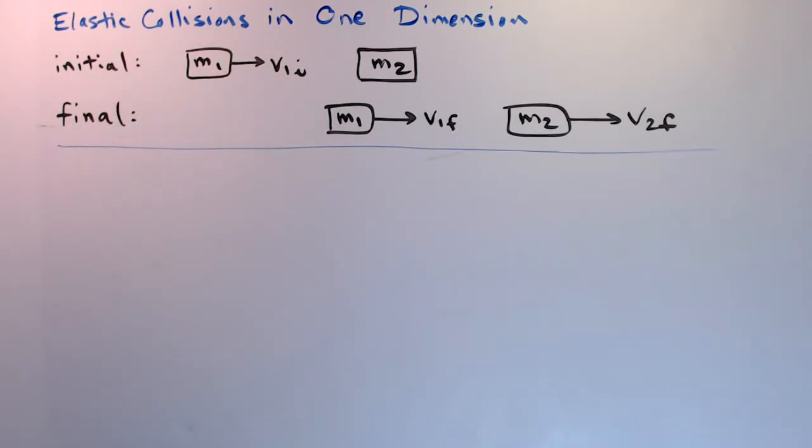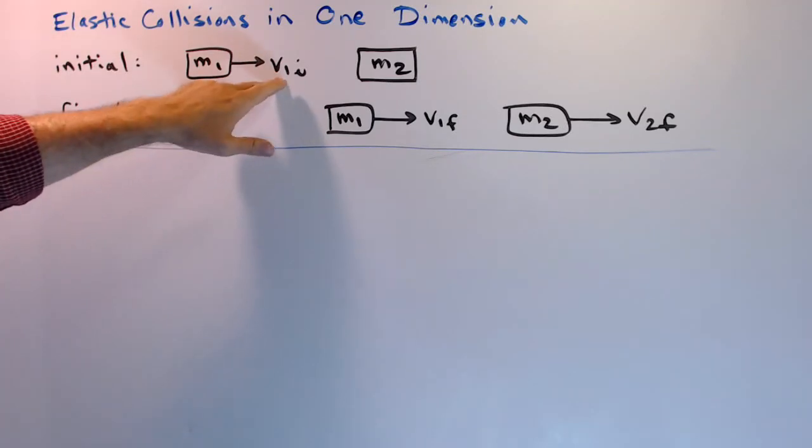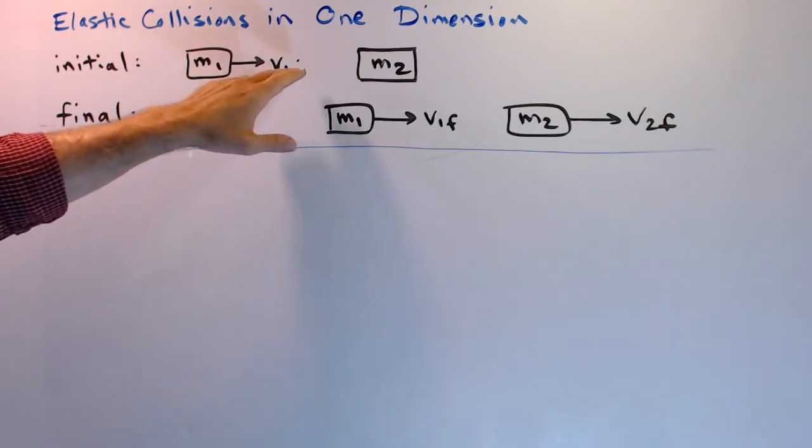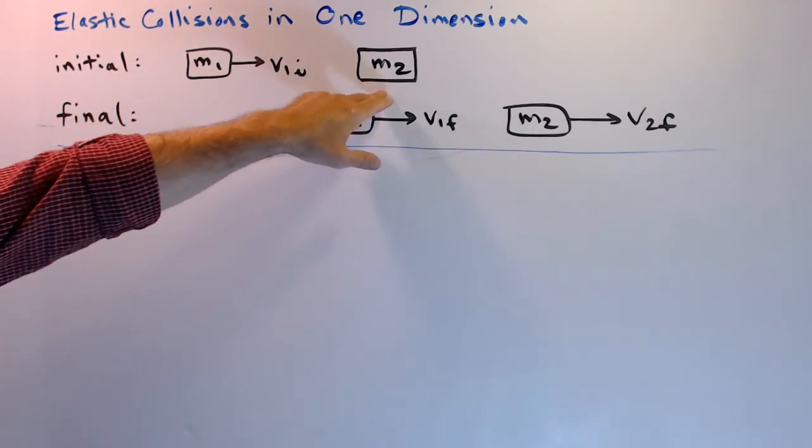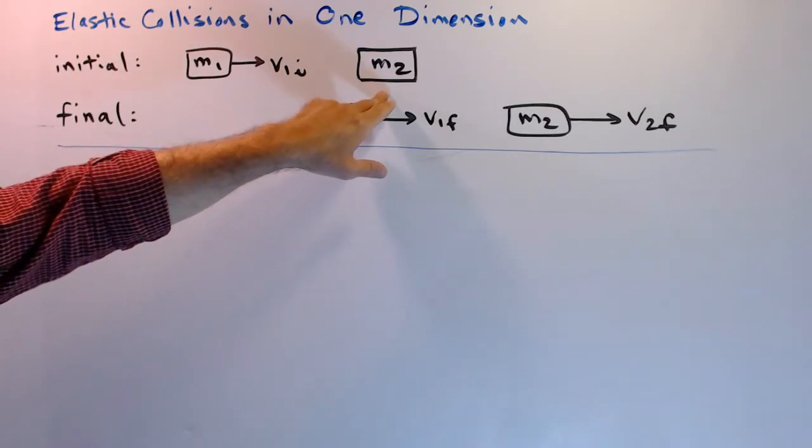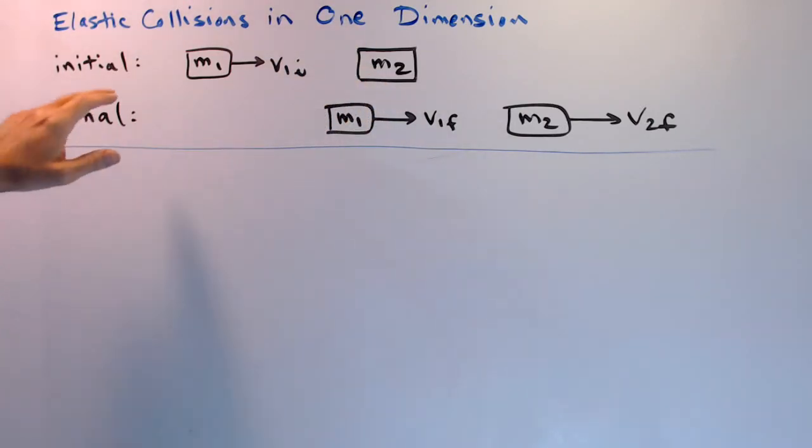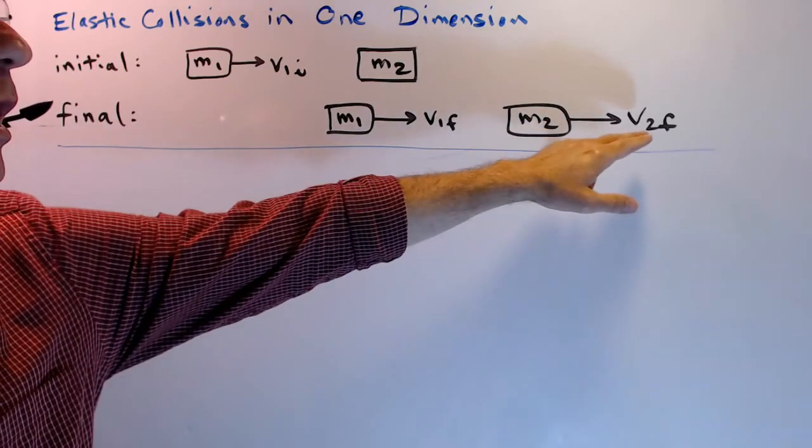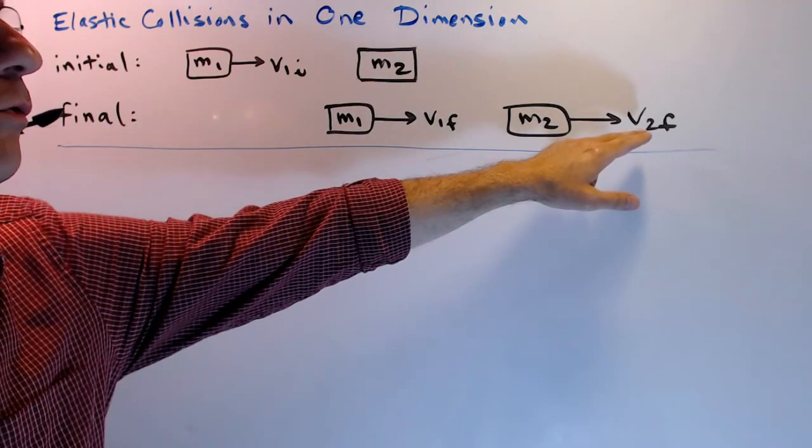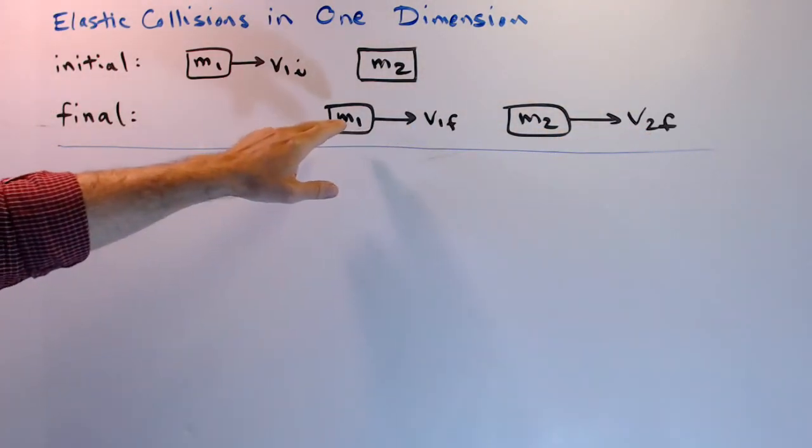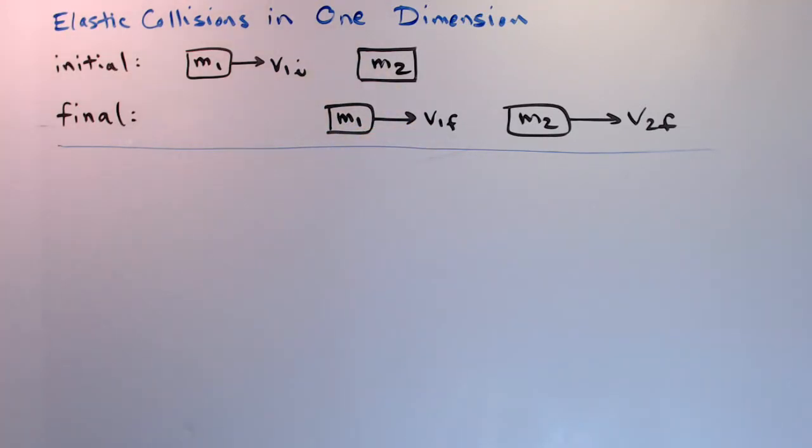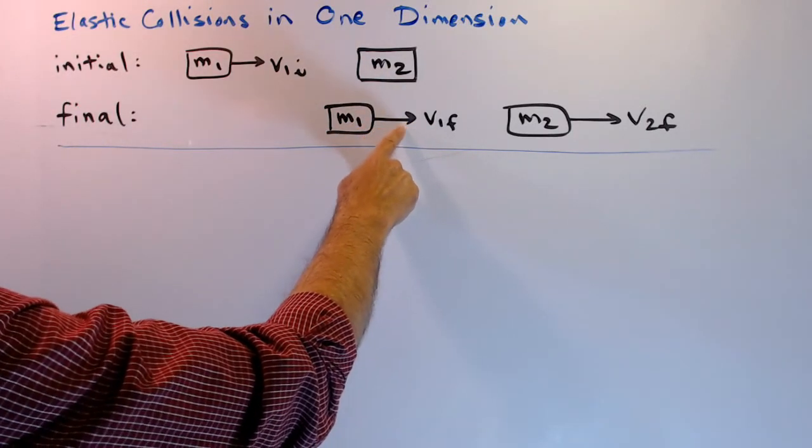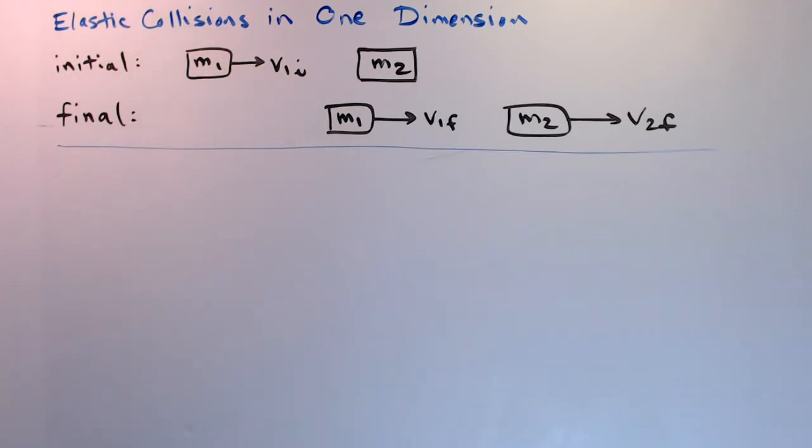So starting from the top, here is our initial state just before the collision. Mass one is incoming with a velocity of v1 initial. It's about to impact mass two, which is stationary. Just after the collision, we have the final state, mass two is moving off with a velocity of v2 final, and then mass one continues on with a velocity of v1 final. This velocity might be to the right or to the left, depending on circumstances. We'll talk more about that later.